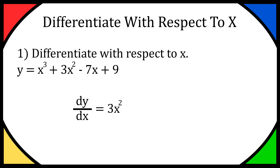You might want to pause the video and give that a go for the next term. So for the next term, we have 3x squared. We want to do the same thing again. We bring the power down to the front, so that's going to be 3 originally, then we times it by 2 because we're multiplying the front number by the original power. So it's going to be 3 times 2 at the front, and then we take one from the power, giving us 6x.